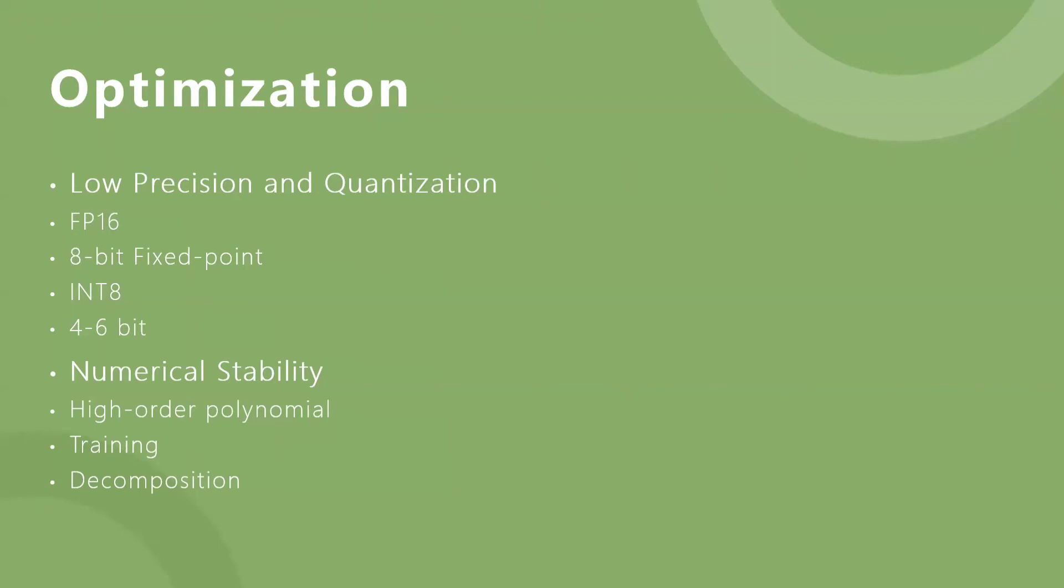The ratio of the largest element to the smallest element of the Winograd transformation matrix increases exponentially with the increase of the tile size, which brings great instability to the calculation. Some researchers have used high-order polynomials to generate transformation matrices with smaller transformation errors. Some researchers have proposed retraining to solve the accuracy problem. Some researchers have also proposed a decomposition method to decompose large convolutions into small convolutions to maintain numerical stability.